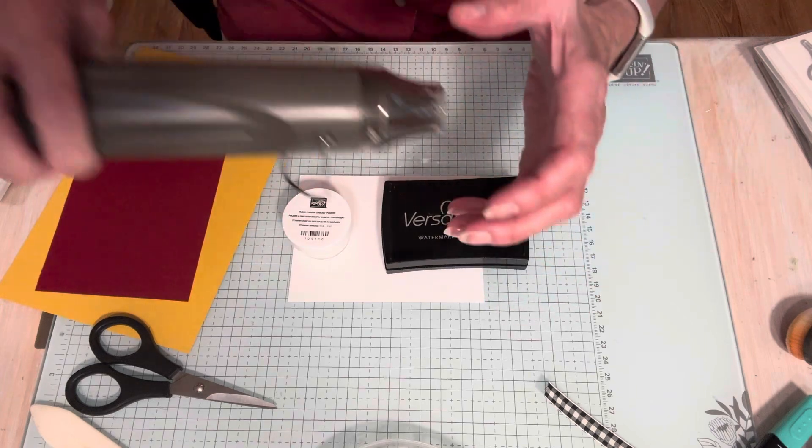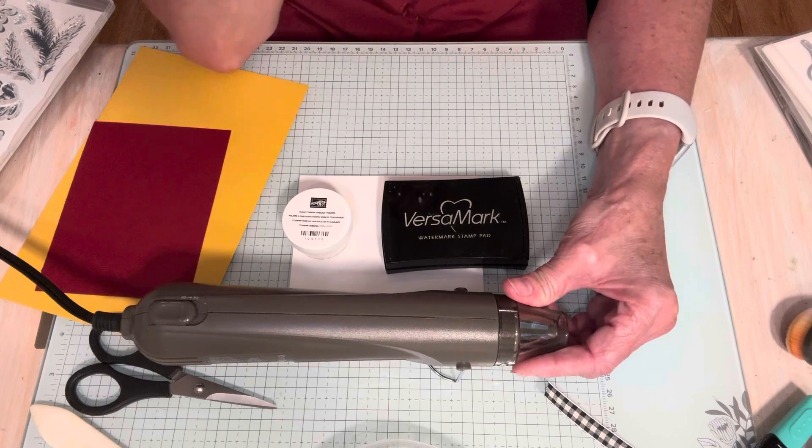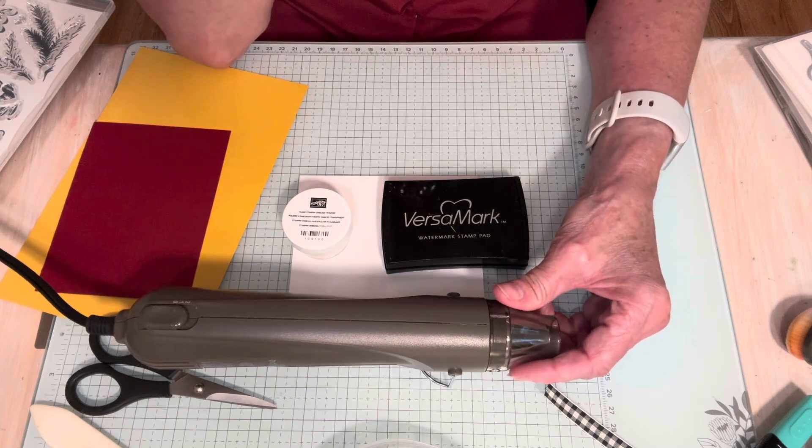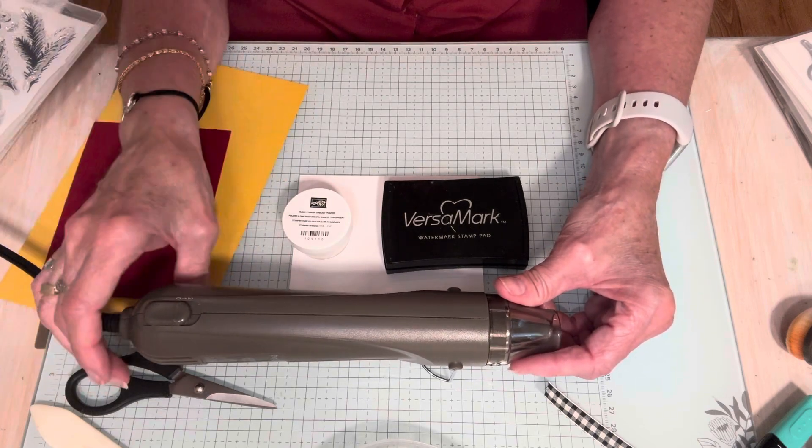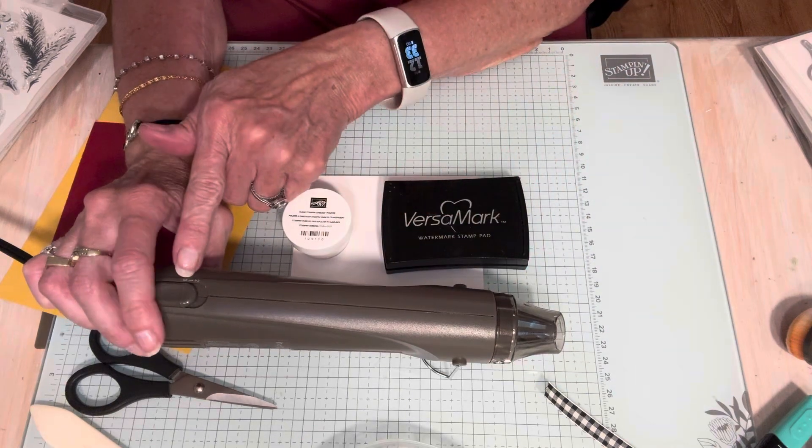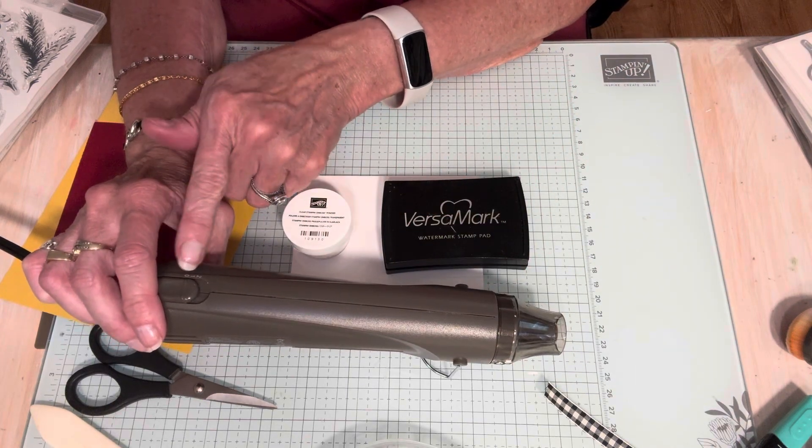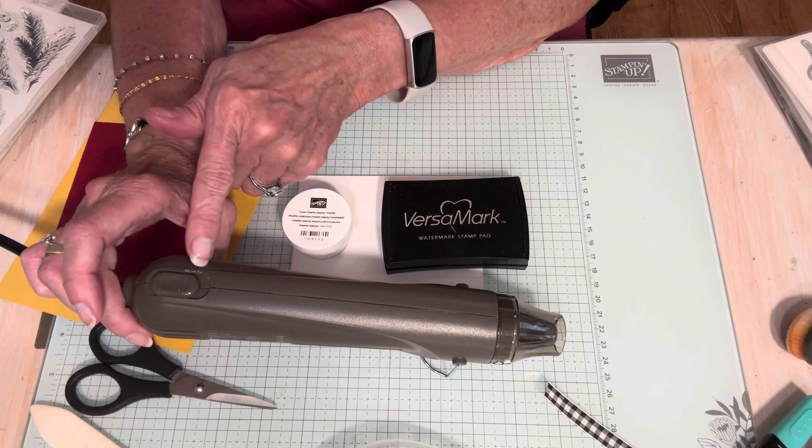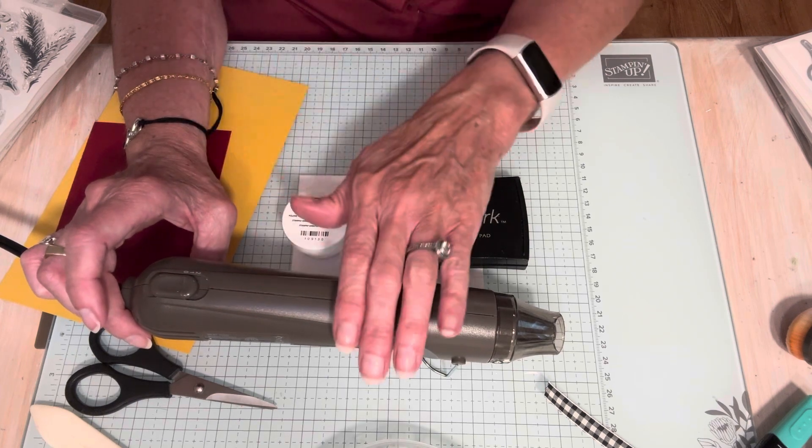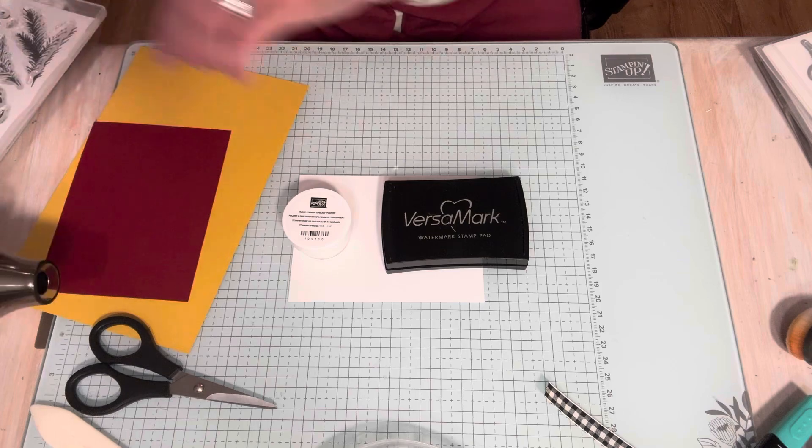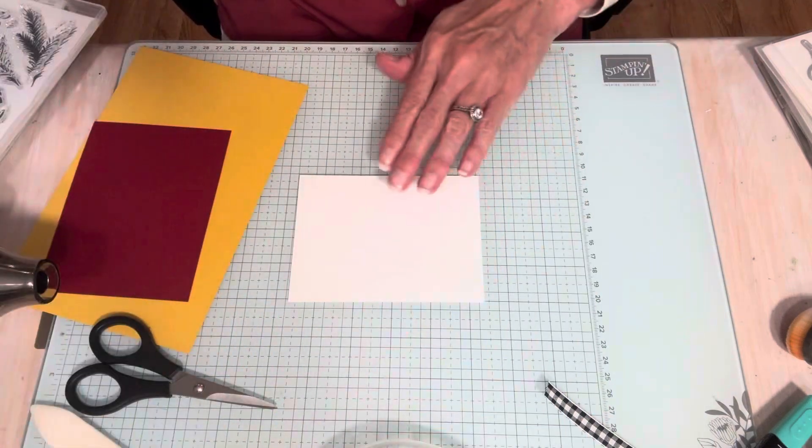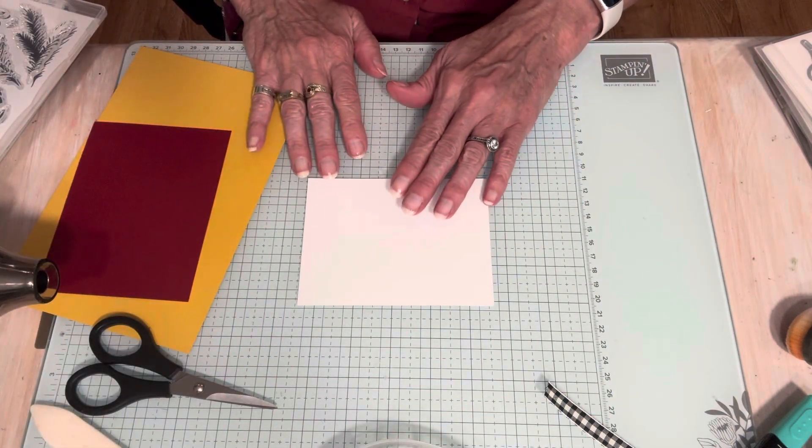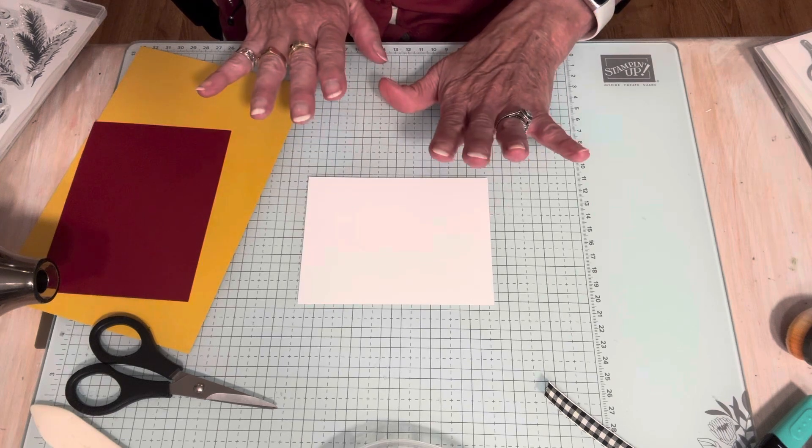And people ask me, would a hairdryer work? No, doesn't get hot enough. You need to have a heat gun. And so the heat gun is awesome. It has two speeds, low and high, one and two, great for vellum and also for cardstock. So I love our heat tool. So today we are going to do heat embossed resist. So the first thing I'm going to do is pick out some stamps.